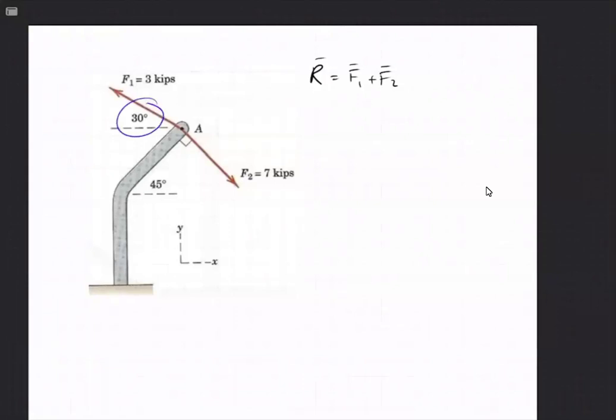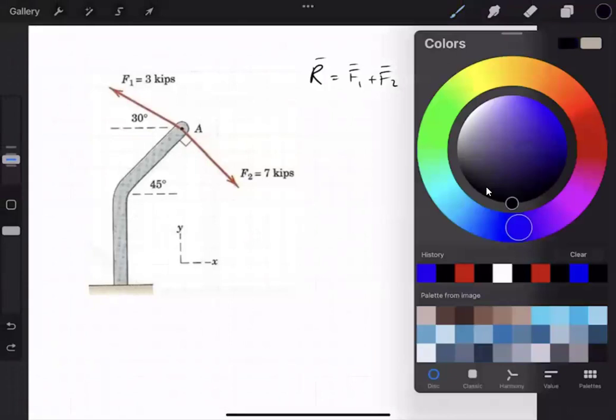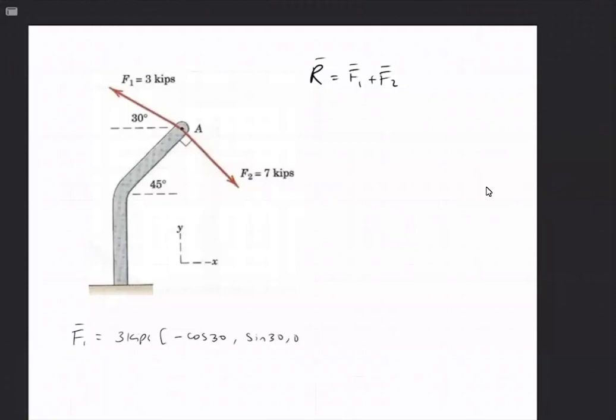F1 is straightforward. It is given by 30 degrees already related to the negative x-axis. So we can put in F1 magnitude 3 kips, negative cosine of 30, positive sine of 30, and I put the 0 in the z-direction as a placeholder to remind ourselves that we are in a three-dimensional world.